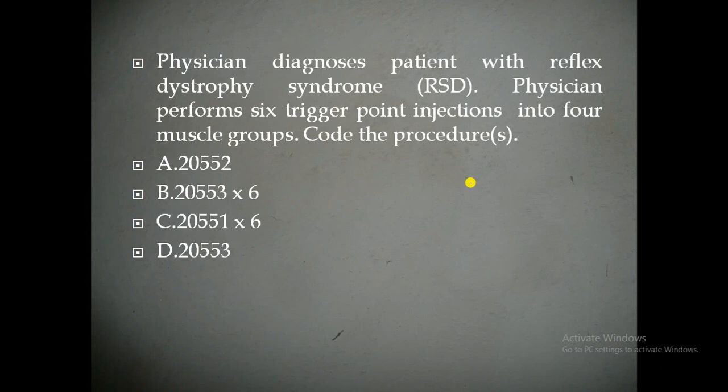Physician diagnoses the patient with reflex dystrophy syndrome. Physician performs 6 trigger point injections into 4 muscle groups — code the procedures. The options are: Option A, 20552; Option B, 20553 x6; Option C, 20551 x6; Option D, 20553.